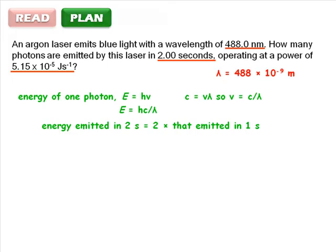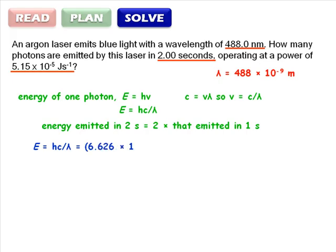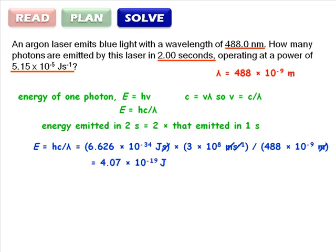With the equations we need in hand, we can set about solving the problem. E equals hc over lambda equals 6.626 times 10 to the negative 34 joule seconds times 3 times 10 to the 8 meters per second divided by 488 times 10 to the negative 9 meters. We can do some cancelling of units. First the seconds, then the meters. And the units we're left with are joules, exactly as we'd expect since we're calculating an energy. Punch the numbers into your calculator and you get 4.07 times 10 to the negative 19 joules as the energy of one photon.